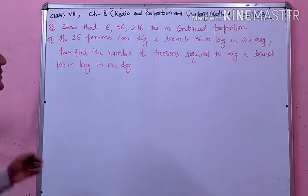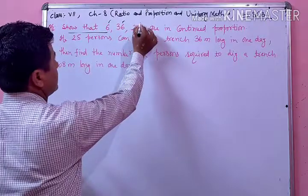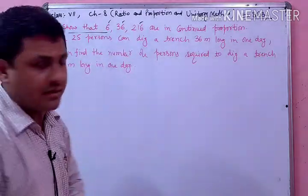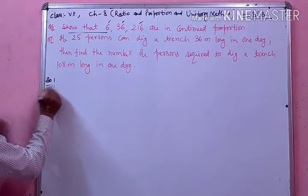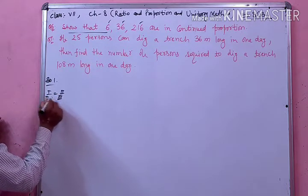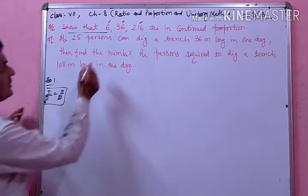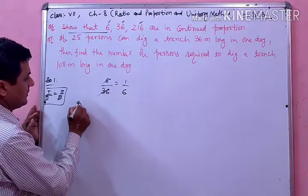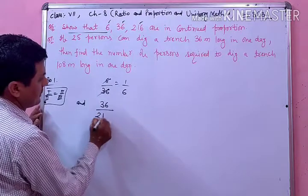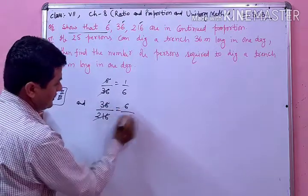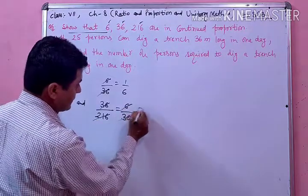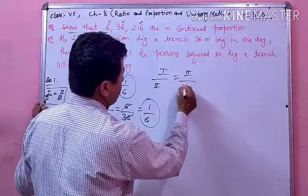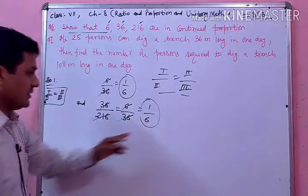Question number 6 के अंदर हमें show करना है: 6, 36 and 216 are in continued proportion. आपको यह बताना है कि क्या यह तीनों continued proportion हैं या नहीं। तो जैसे first upon second और second upon third का ratio equal आए। इसके अंदर first upon second करते हैं — cut करेंगे तो आ जाएगा 1 upon 6. और second upon third — 6 को cut करते हैं, 36 upon 216, फिर 6 से cut करेंगे तो 1 upon 6. दोनों cases में answer same आ रहा है।